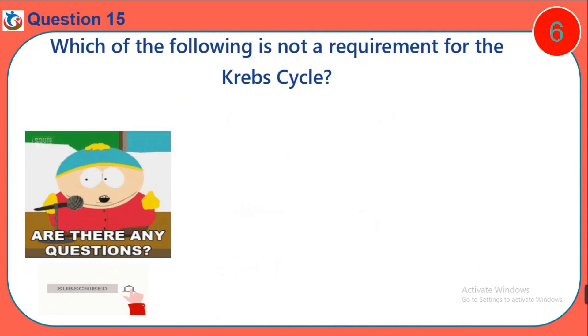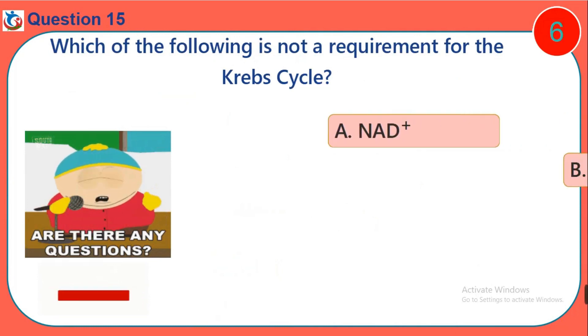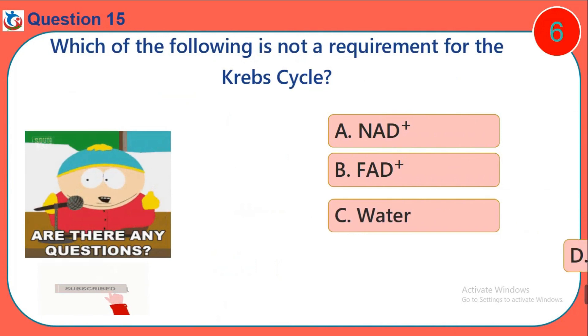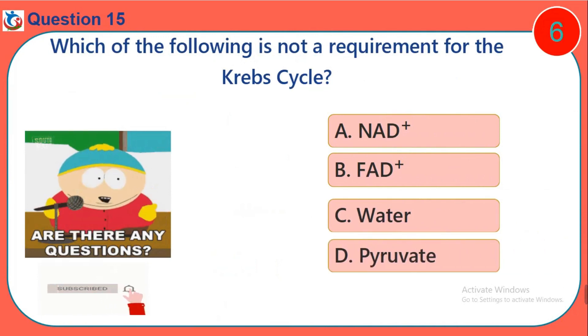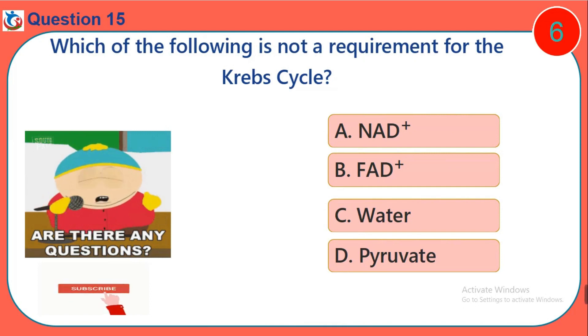Question 15. Which of the following is not a requirement for the Krebs cycle? A. NAD+. B. FAD+. C. Water. D. Pyruvate.